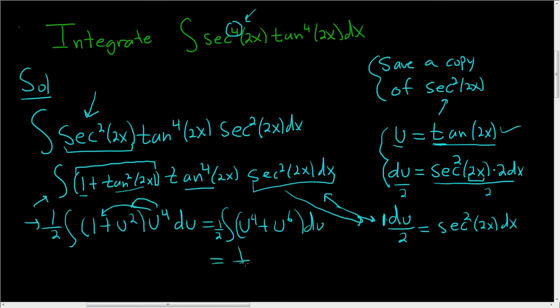So 1 half u to the fifth over 5 plus u to the seventh over 7 plus our constant.